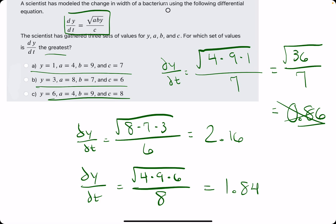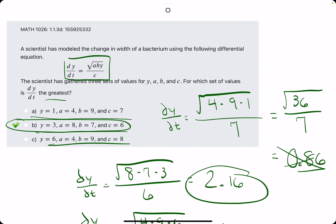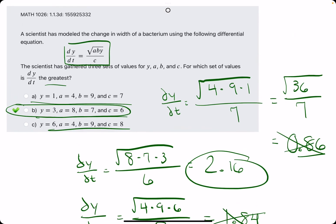Of these options, it looks like option B's dy over dt value was the largest — the greatest. So we break out the eraser, and we see that B is our answer.